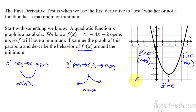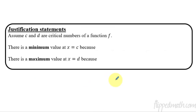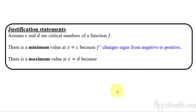Okay, so that's what we're doing today — just one more step. You've already figured out how to do intervals of where a function is increasing or decreasing. Now we just throw in the understanding of a critical point and whether it's a minimum or a maximum. That is the first derivative test. Here are our justification statements — these are important because this justifies using calculus whether or not you have a minimum. Let's say c and d are our critical numbers. There is a minimum value at x equals c because f prime changes signs from negative to positive.